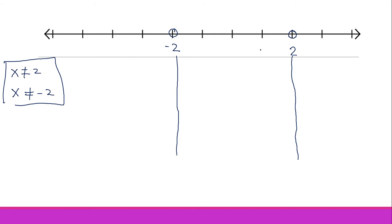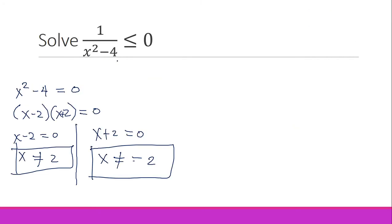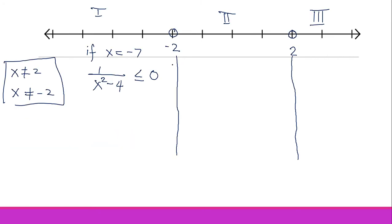We divide the number line into regions using those critical numbers, giving us Region 1, Region 2, and Region 3. Note: even though the inequality is 'less than or equal to zero,' we still use hollow circles because both critical numbers come from the denominator. Let's test Region 1.